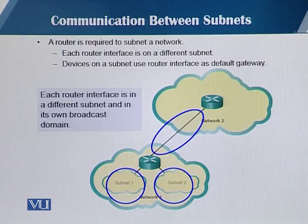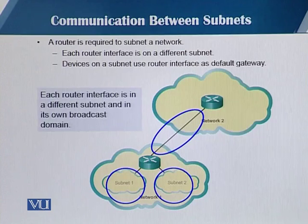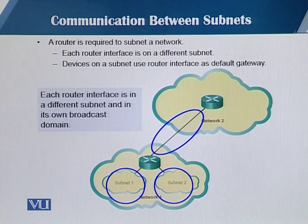A router is basically required to subnet a network. Every interface in a router is connected to a subnet, and the devices on a subnet use the router interface as their default gateway. Each router interface is in a different subnet and in its own broadcast domain. As you can see on the slide, there are basically three subnets — subnet one has its own broadcast domain, subnet two has its own broadcast domain, and the third subnet, which is a serial connection between the two routers, has its own broadcast domain.